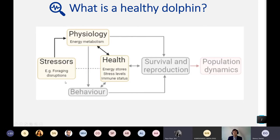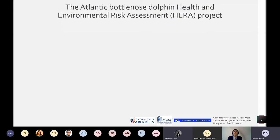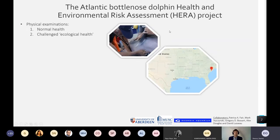To understand how stressors impact dolphin health, we first need a good definition of what a healthy dolphin is — and we don't really have that. To try to answer this, I'm part of the HERR project: the Atlantic Bottlenose Dolphin Health and Environmental Risk Assessment. This project looks at a population of dolphins off the coast of South Carolina in Charleston Harbor. They do physical examinations on dolphins and classify these animals as having either normal health or what we call challenged ecological health.